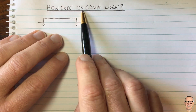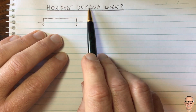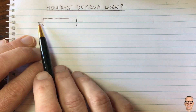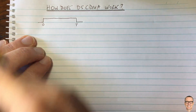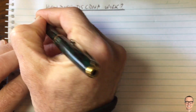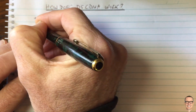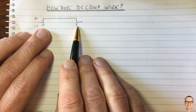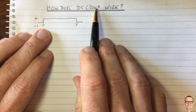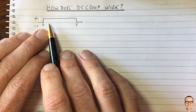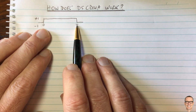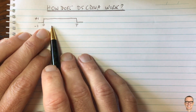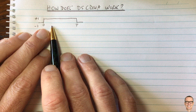So how does direct sequence code division multiple access work? Well, let's consider sending a digital signal of either plus one or minus one over a time period capital T. And if multiple users wanted to send at the same time - this is multiple access - unless you do something clever, they will interfere with each other.